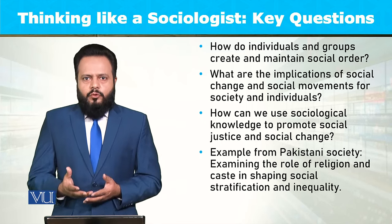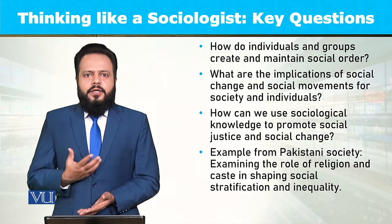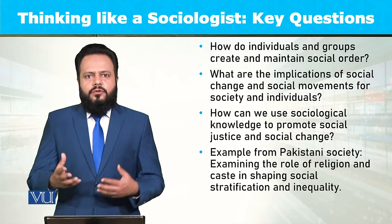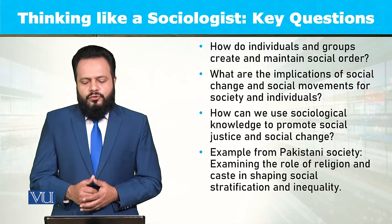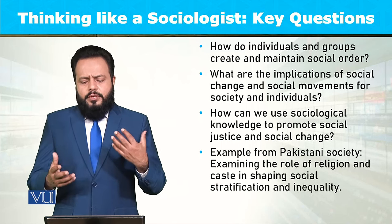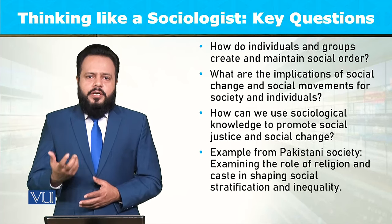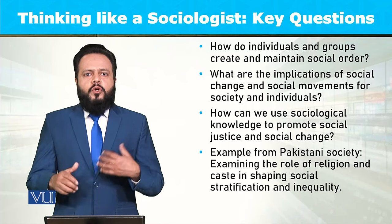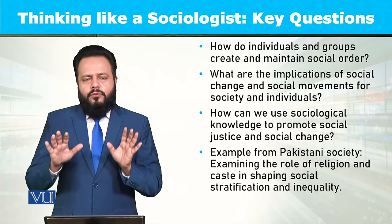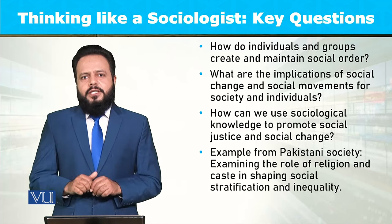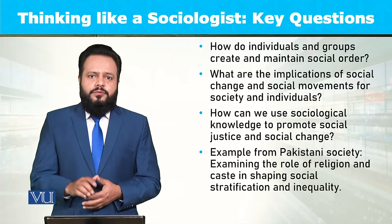And how do individuals and groups create and maintain social order? Social order سے مراد ہے کہ معاشروں کے اندر امن و امان کی صورتحال کس طرح قائم رہ سکتی ہے۔ یہ انسان کی فطرت ہے کہ وہ social order کو پسند کرتے اور disorder کو avoid کرنے کی کوشش کرتے ہیں۔ تو ان سارے aspects کو سمجھنے کی کوشش کی جاتی ہے جن سے social order میں disruptions یا eruptions پیدا ہوتی ہیں۔